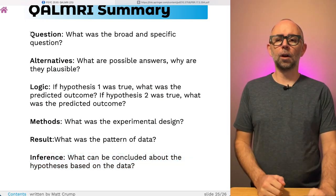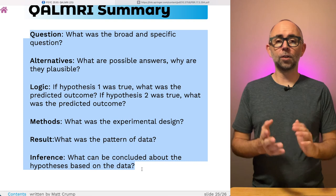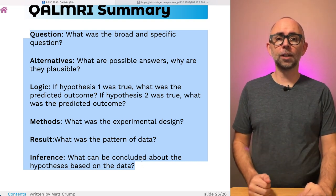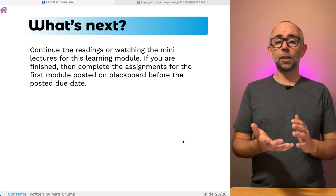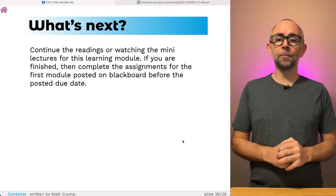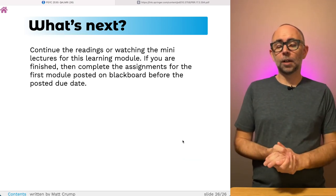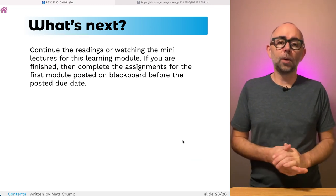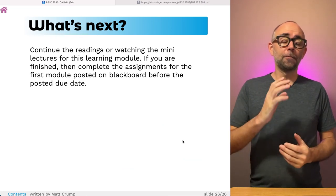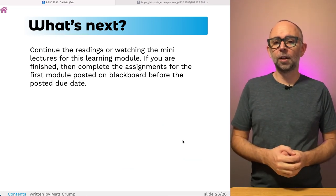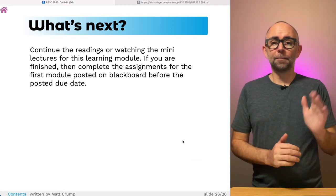If you can answer all of these things after reading a research article, pat yourself on the back. You've done a good job of extracting some of the central ideas and themes from the paper. So, what's next? You could continue with the readings, watching the other mini-lecture for this learning module. If you're finished, then go ahead and take the quiz. If you want to try out a QALMRI exercise, then go ahead and complete the assignment for this module that asks you to find a research paper in cognition and try to write a QALMRI for it. All right. See you next time. Thanks again.